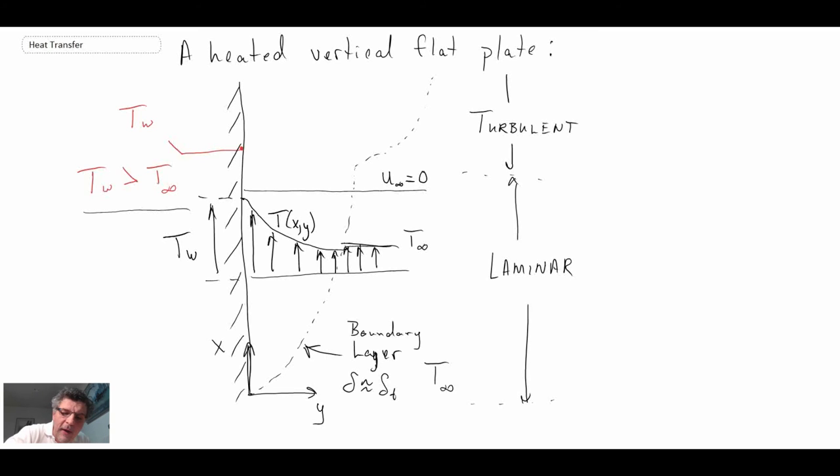If you were to again place a probe that enabled you to measure velocity normal to the wall, you would find a profile that would look something like this. It would spike up and then it would come back down towards zero. This then would be the velocity profile normal to the wall. And again, it is a function of X and Y.